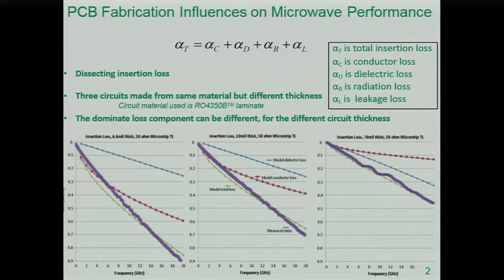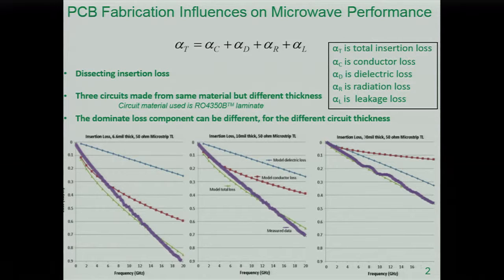The way I like to talk about insertion losses is in a graphic sense. I'm going to look at three different charts. The one in the middle has the legend. This is using a 10-mil thick substrate — the Rogers 4350B — a 50-ohm microstrip transmission line. I've plotted the measured results for insertion loss from about 10 megahertz out to about 20 gigahertz. That's the thick purple line. Along with that are curves generated from a free software on our website called MWI 2014. What I like about that software is it gives me the ability to dissect the losses — how much of the total insertion loss is made up of dielectric losses or conductor losses. I get my model to where it matches pretty closely to the measured loss of the circuits.